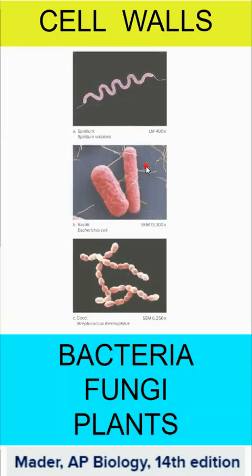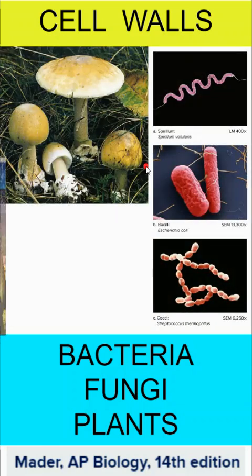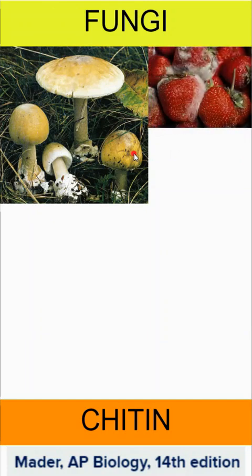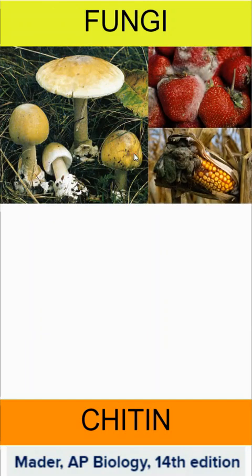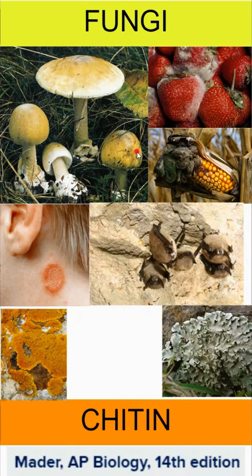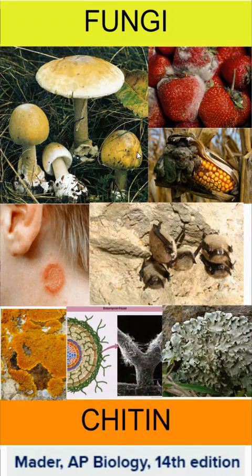When we talk about cell walls, we're going to talk about bacteria, fungi, and plants. Fungi — we usually think of mushrooms, but we also have mold and yeast. We can have corn smut and the type of fungus that causes Dutch elm disease. We also have ringworm, and white nose syndrome in bats is caused by fungi. Lichen are a symbiotic relationship between algae and fungi, and 90% of all terrestrial plants contain mycorrhizae, where fungi interact with plant cell root hairs. All of these different types of fungi have the same carbohydrate in their cell walls, which is chitin.